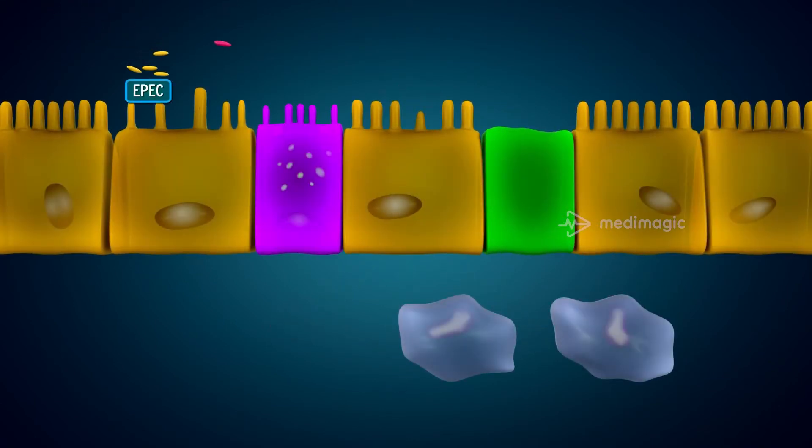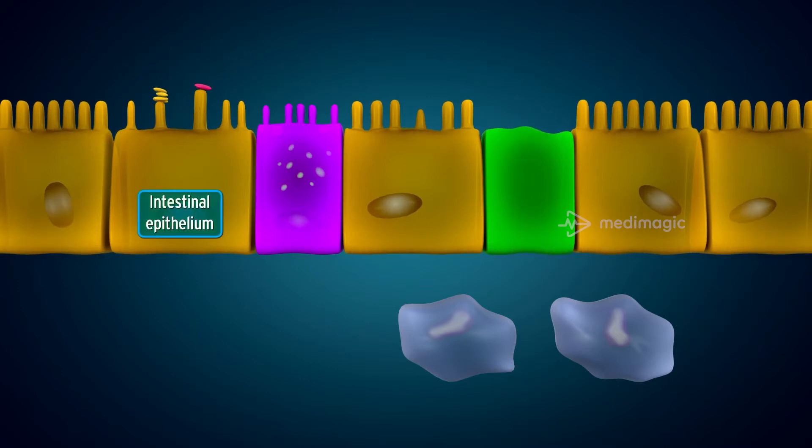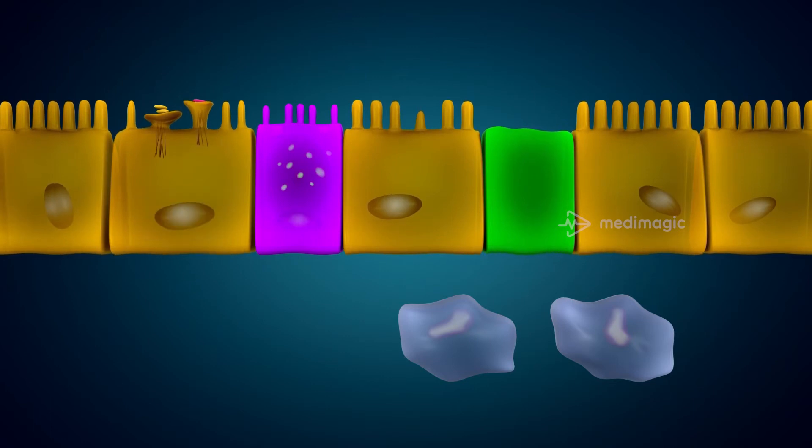Enteropathogenic E. coli or EPEC and Shiga toxin producing E. coli or STEC are extracellular pathogens that attach to the intestinal epithelium and efface microvilli. Due to the presence of bundle-forming pili, EPEC is capable of forming microcolonies resulting in a localized adherence.